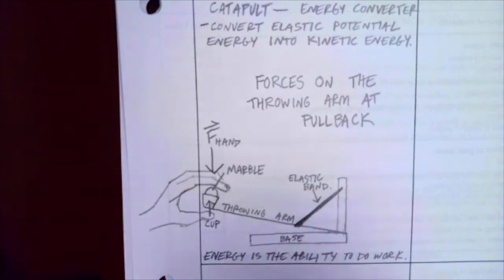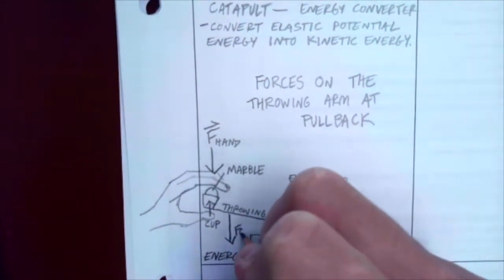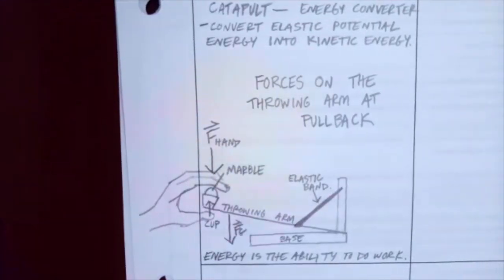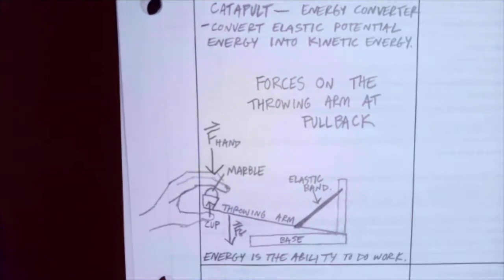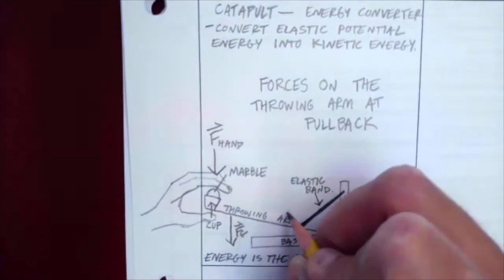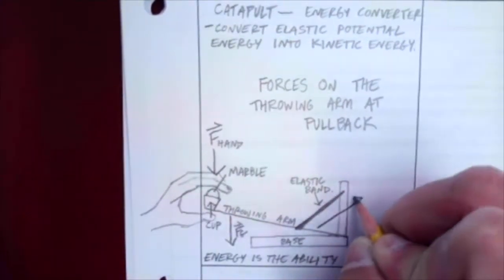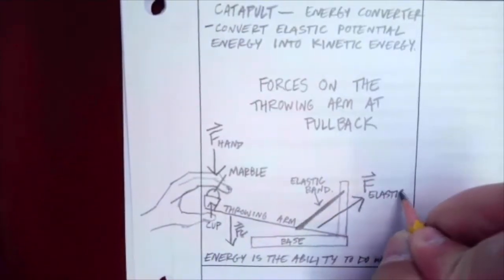What else is pulling down on the throwing arm? Right. Nice. Force of gravity. Yeah. You get your FG. FG is always here. Our friend, the force of gravity. What is pulling in the other direction? The band. Yeah. The elastic band. So you have the force of the elastic band.